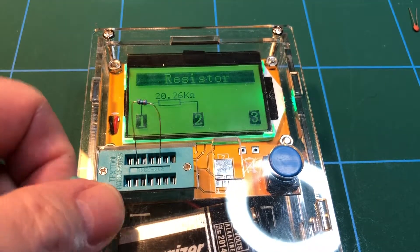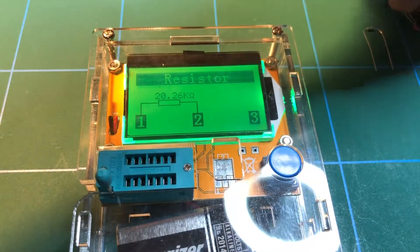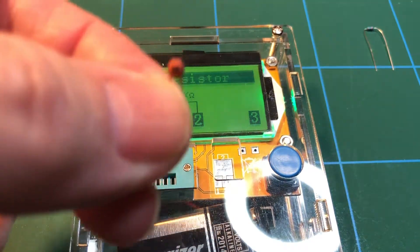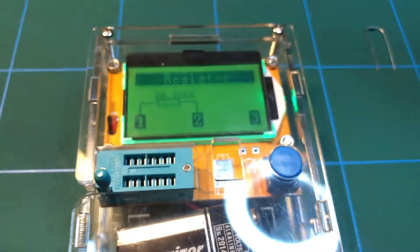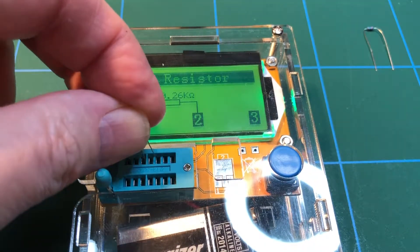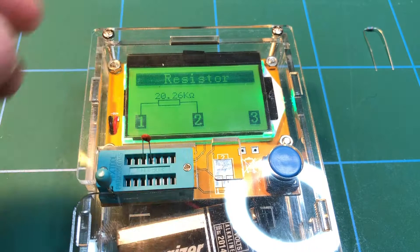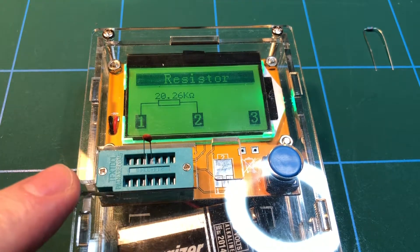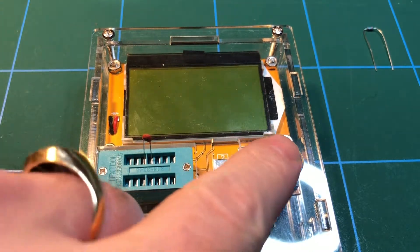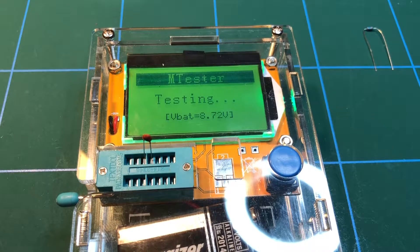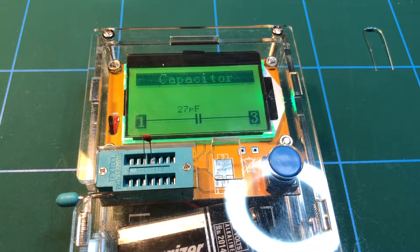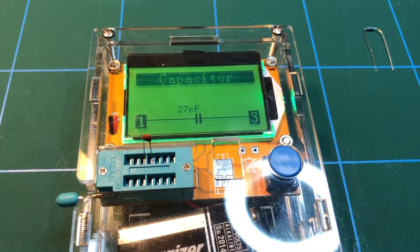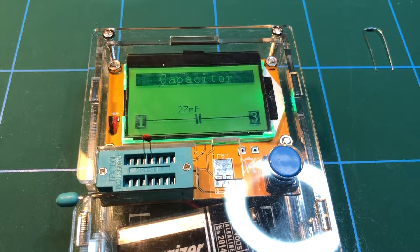So that's a resistor. I don't have much in the way of components to test with this thing. What have we got here. This is a small ceramic cap. 30 on it. I don't know what 30 means. You can tell if I know what my stuff is. Right, so let's clamp that one in. Press the button. Testing. And there we go, that's a 27 picofarad capacitor. There we go.